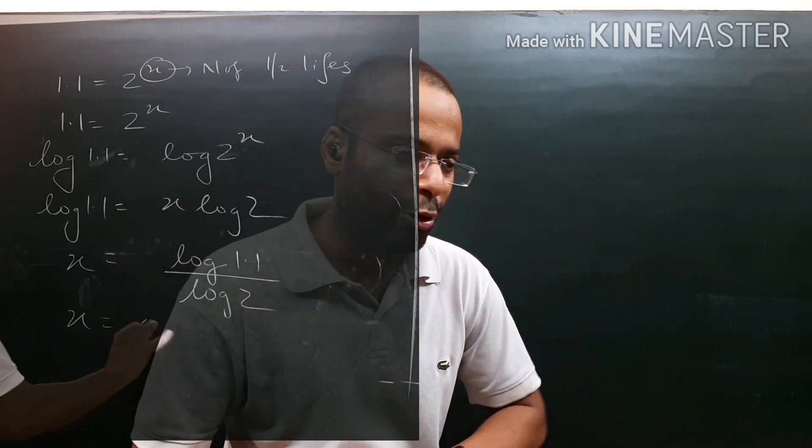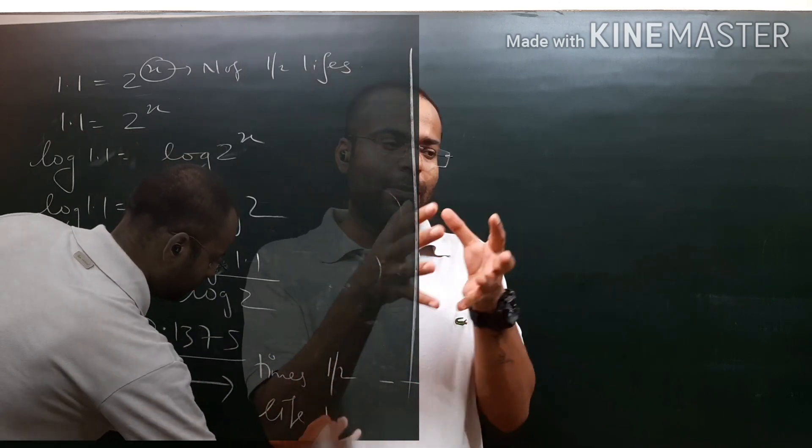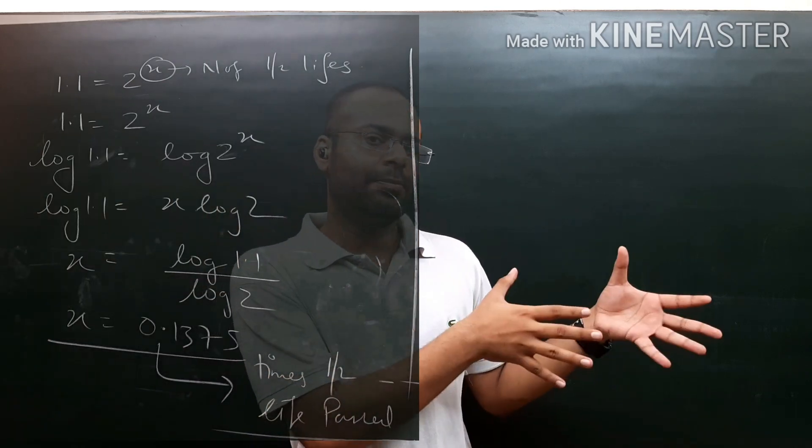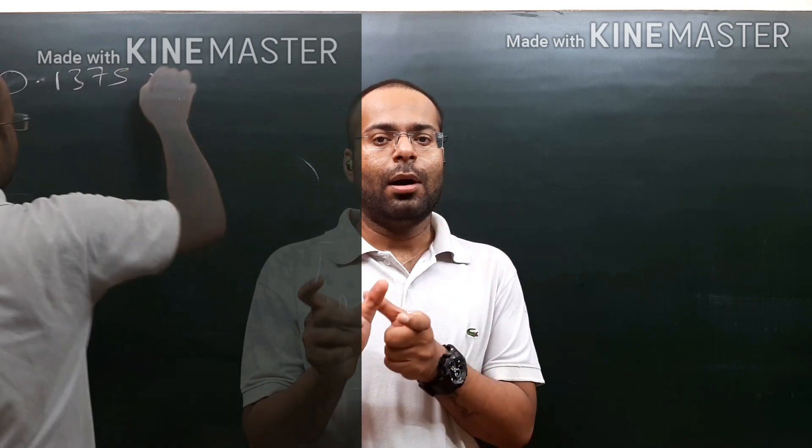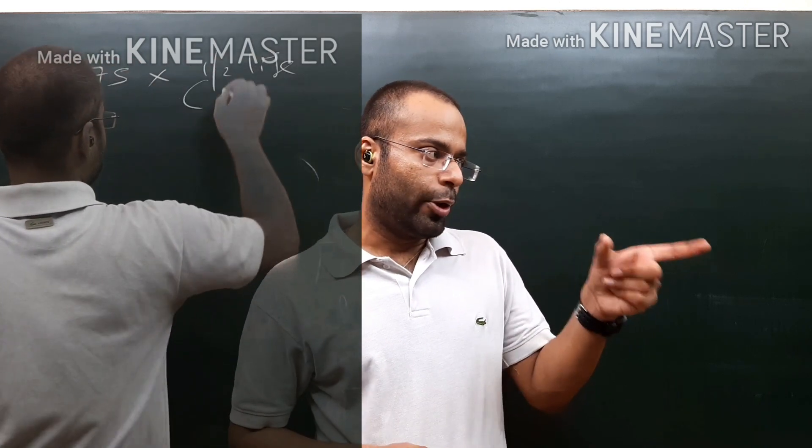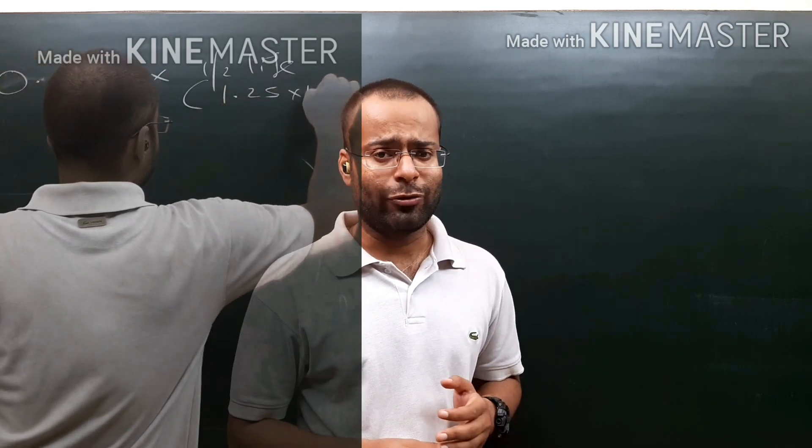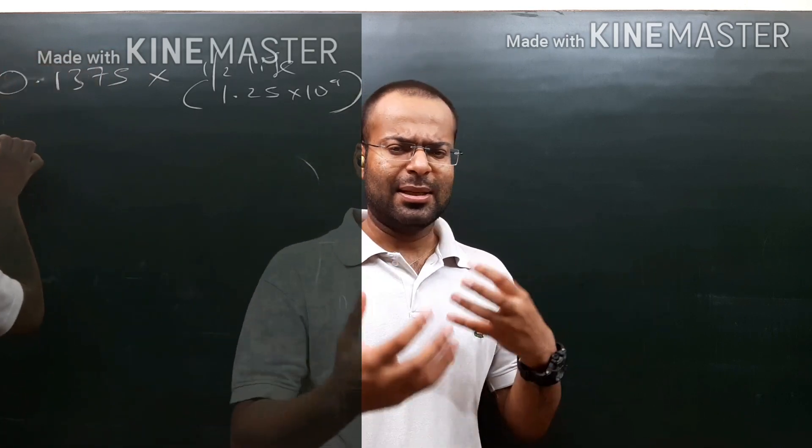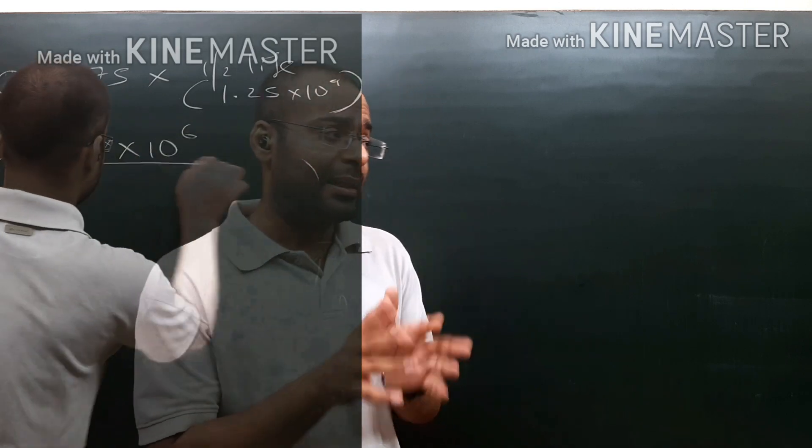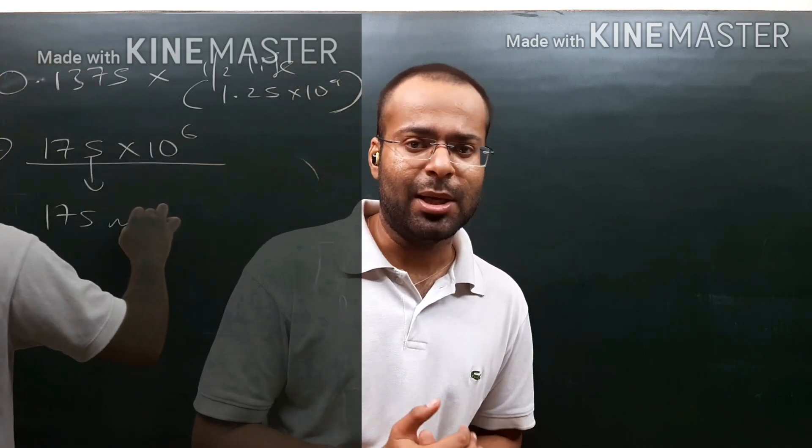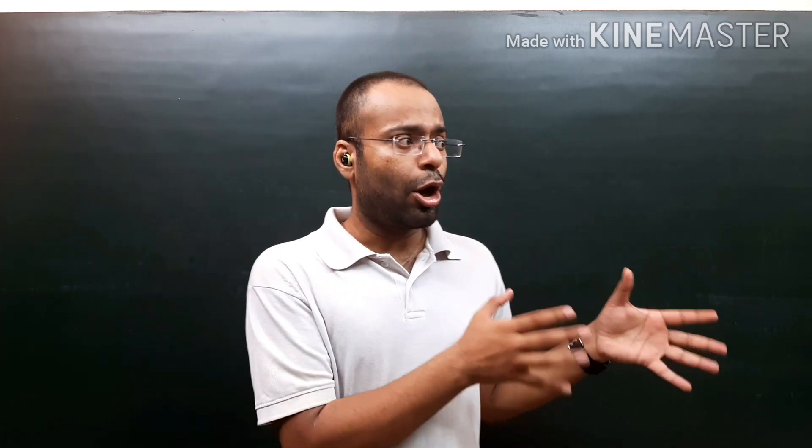Just multiply this value by the half-life: 0.1375 × 1.25 × 10⁹. Doing the calculations, we get an approximate value of 175 million years (175 × 10⁶). So this rock is 175 million years old.